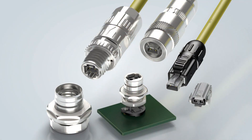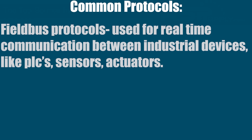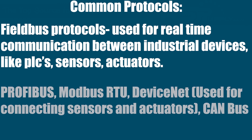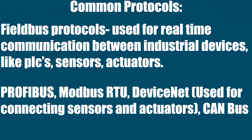Category number one is fieldbus protocols. These are used for real-time communication between industrial devices like PLCs, sensors, actuators, and such on a factory floor. Examples include Profibus, Modbus RTU, DeviceNet — used for connecting sensors and actuators — and CanBus.